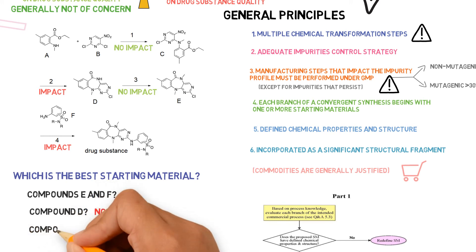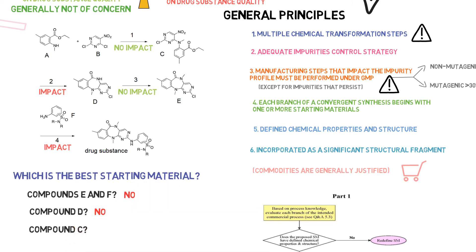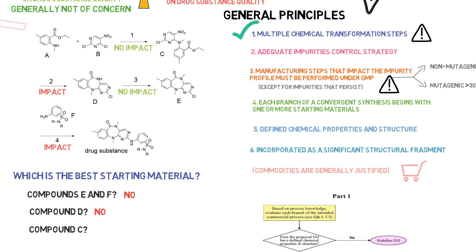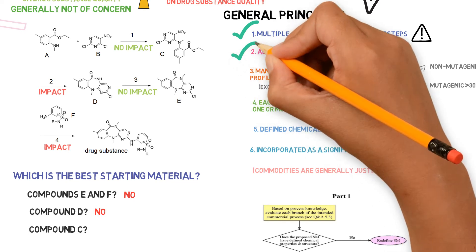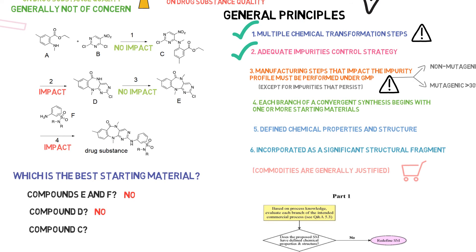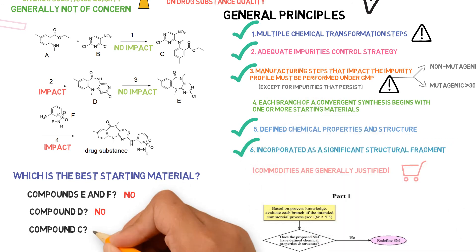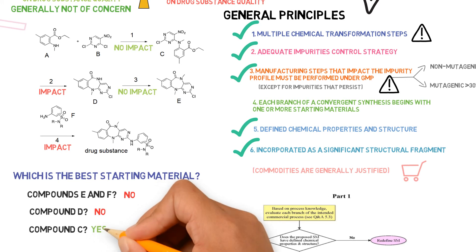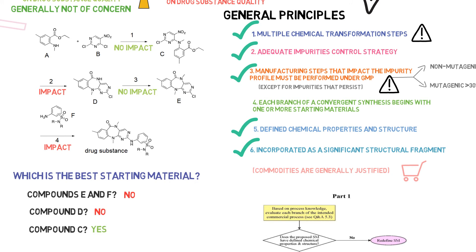What about compound C? There would be multiple chemical transformation steps. The control strategy is adequate. All manufacturing steps that impact the impurity profile would be included. Besides, this is an isolated compound, so it has defined chemical properties and structure. And it is incorporated as a significant structural fragment in the drug substance. This is not a commodity, but all other principles were met. So compound C seems to be the best starting material.